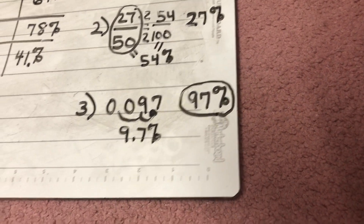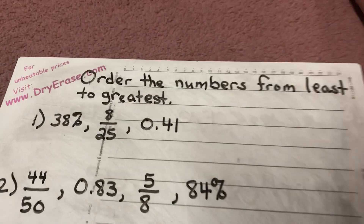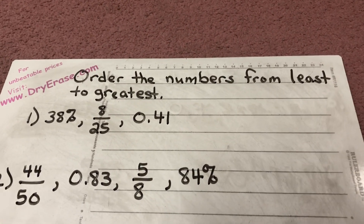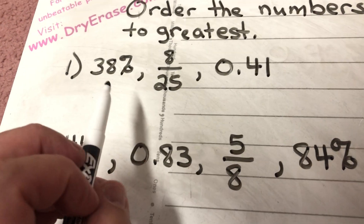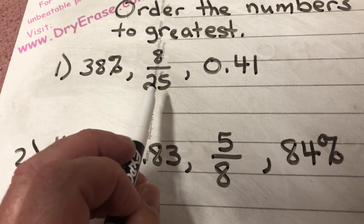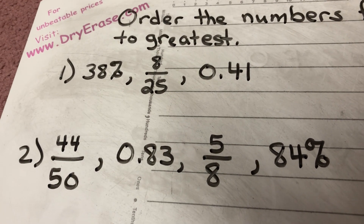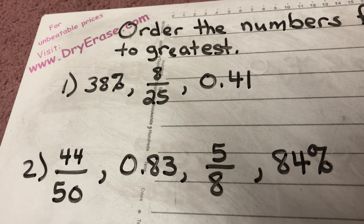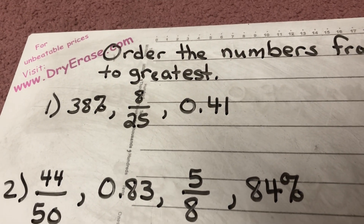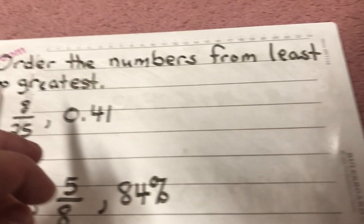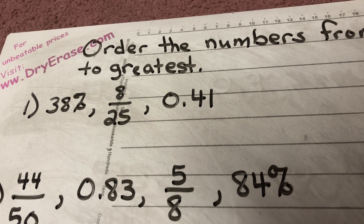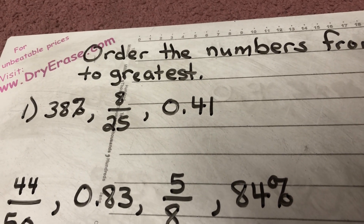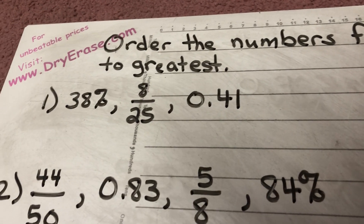The last part is a different way of doing the same thing: order the numbers from least to greatest. Make sure you're doing the smallest first and building up to the greatest — sixth graders, don't get these wrong by accidentally putting them in order from greatest to least.